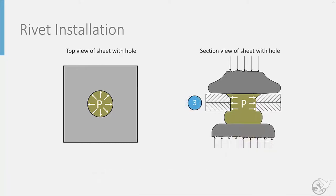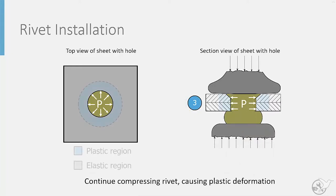Further compressive forces cause the formation of the deformed rivet head. However, it also results in plastic deformation within the sheet, highlighted here in blue.